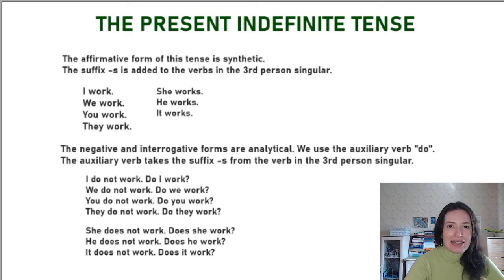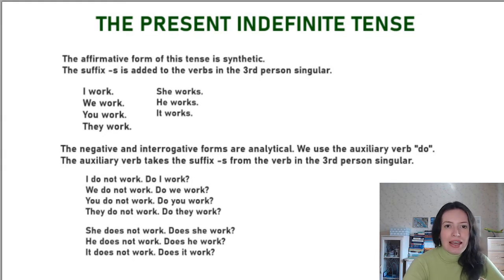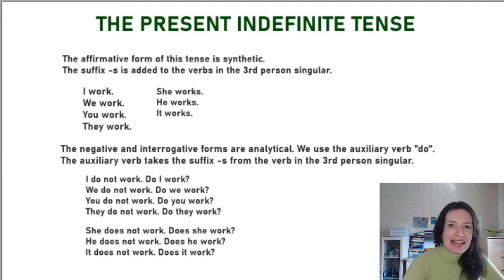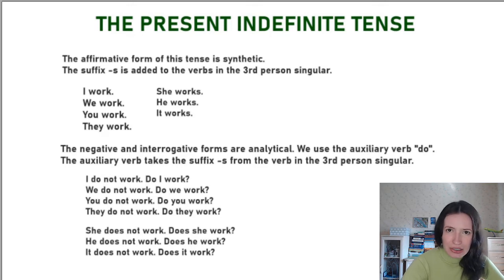And then if you have a third person singular — he, she, or it — you are going to add the suffix -s at the end, one of the few English suffixes. The rules of its spelling and pronunciation are exactly the same as the word for the plural. So: I work, we work, you work, they work — but she works, he works, and it works.